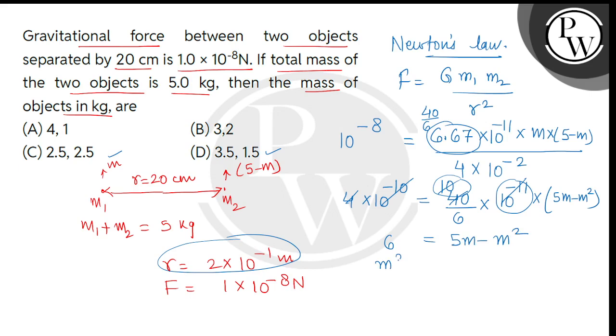We can write m square minus 5m plus 6 equal to 0. Now we will split the middle term. This is m square minus 2m minus 3m plus 6 equal to 0.